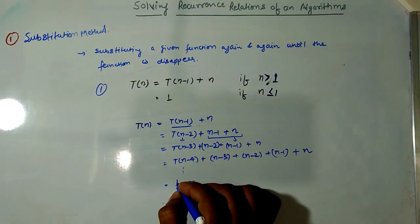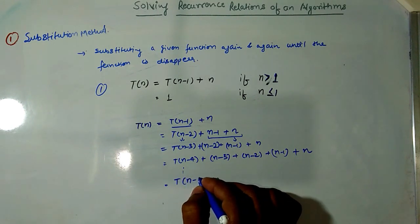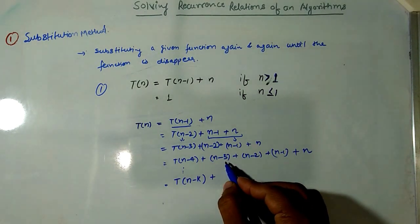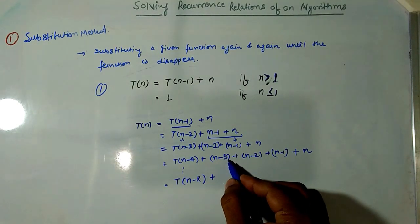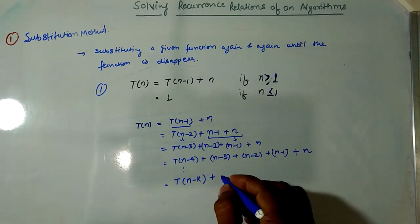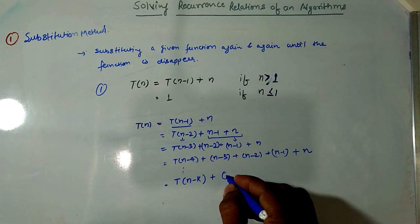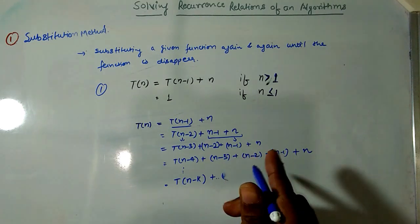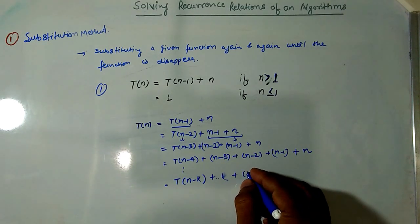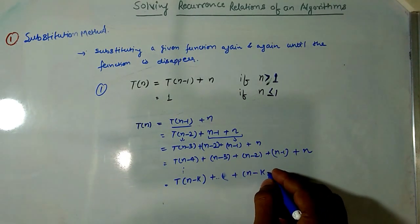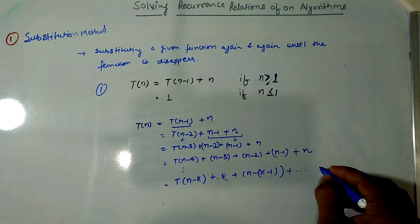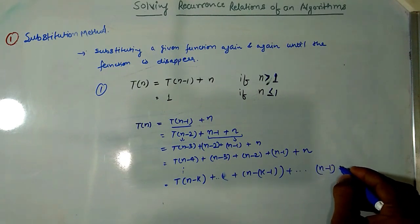For the kth term, it would be T(n-k) + (n-k-1) + ... + (n-1) + n. We keep substituting at each step, reducing the argument by one each time.